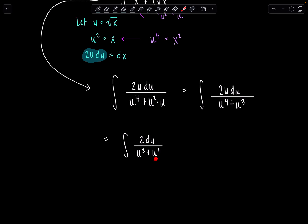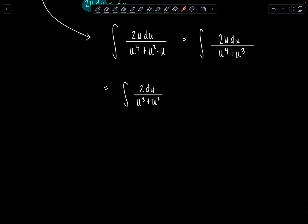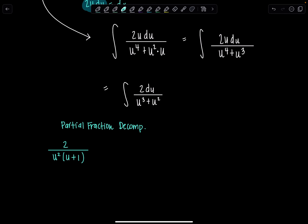Now if I look here, my integrand is a rational function. I'll go ahead and do partial fraction decomposition, and then hopefully we can just integrate from there. So it's partial fraction time. We have 2 over — let me factor the denominator. I can take u squared out of both terms and then you're left with u plus 1.